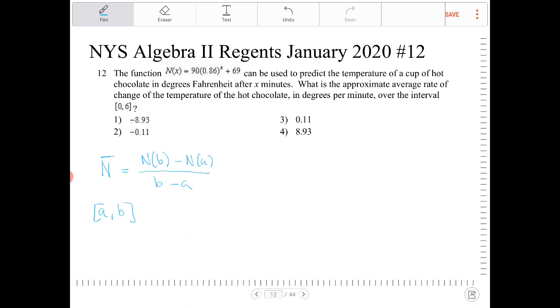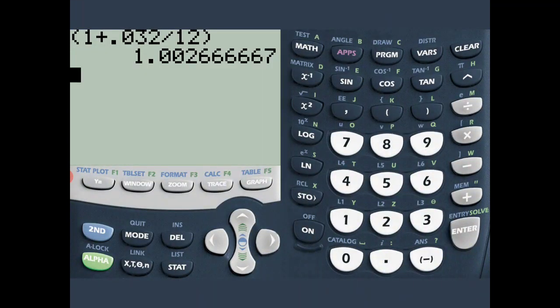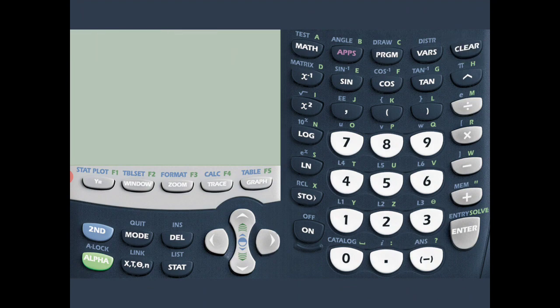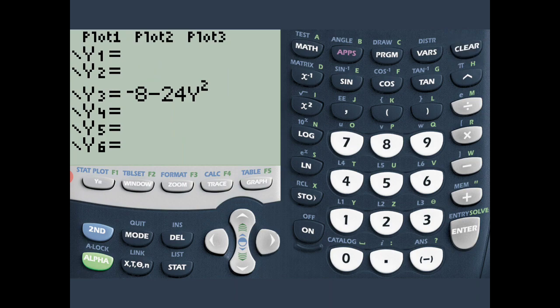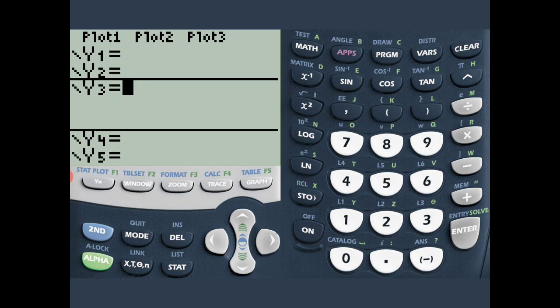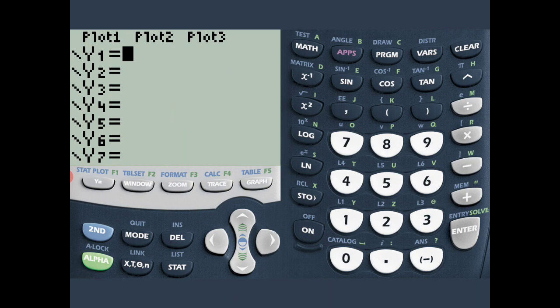So let's take this idea and try to find out what is the average rate of change. To do that, we're going to use our graphing calculators. I'm going to go to my graphing calculator and go into the Y equals. I want to clear whatever is there because I don't need any of those things.